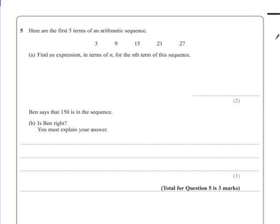Question 5. Here are the first 5 terms in an arithmetic sequence. So an arithmetic sequence says that it's going up by a set number each time. Part A finds an expression in terms of n for the nth term in this sequence.